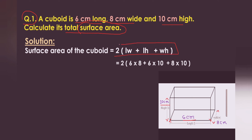Here is the formula. The surface area of a cuboid is 2 times (LW + LH + WH). L means length, W means width — you can also write LB for length times breadth — and here is breadth and height. You can also write BH or WH.